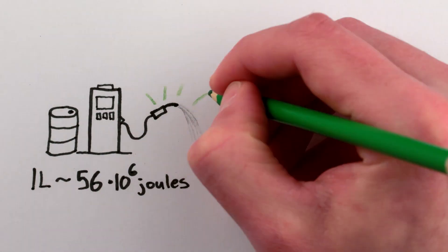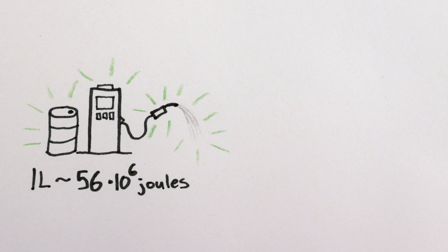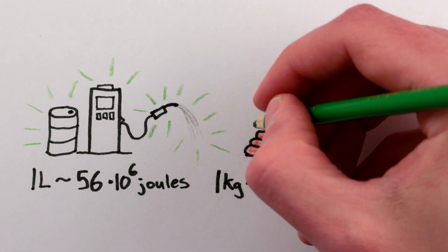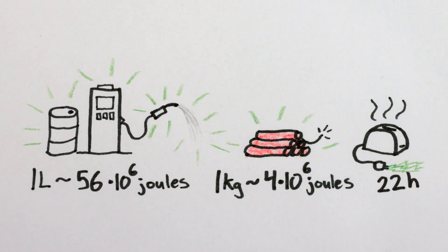Gasoline has approximately 56 megajoules of chemical energy per liter, which is more energy than you get from exploding the same amount of TNT, and is enough to power a toaster for a full day.